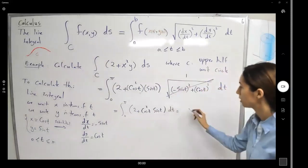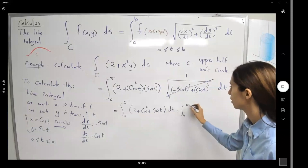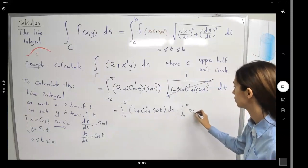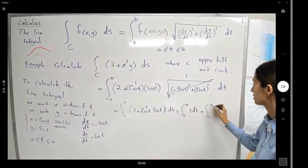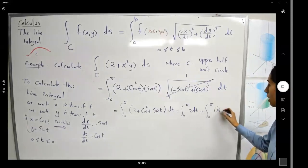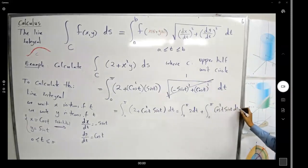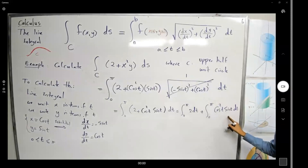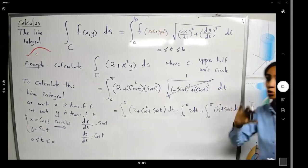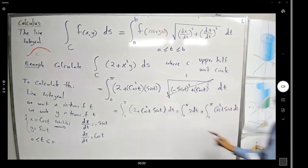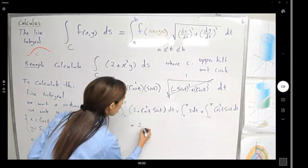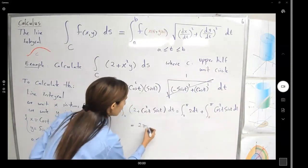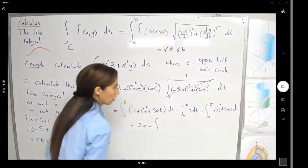So this integral is now ∫₀^π (2 + cos(t)·sin(t)) dt. This becomes the integral from 0 to π of 2 dt, plus the integral from 0 to π of cos²(t)·sin(t) dt. The first part gives 2π. For the second part we can use u-substitution.